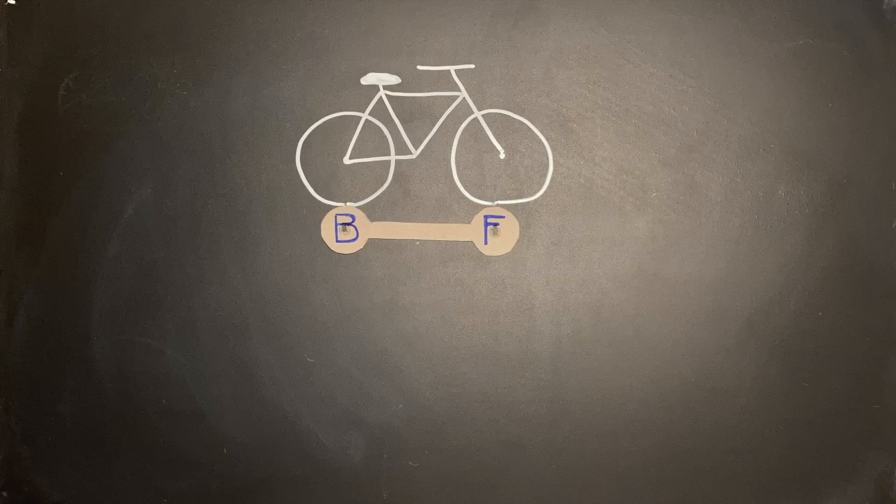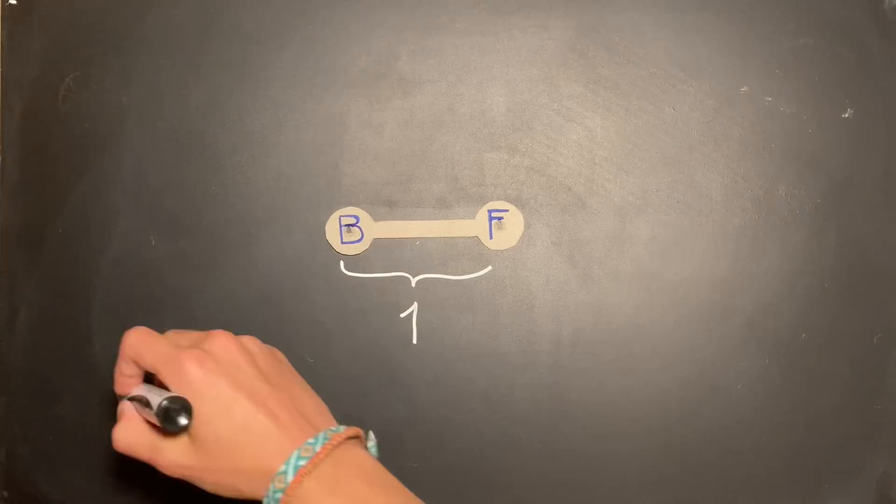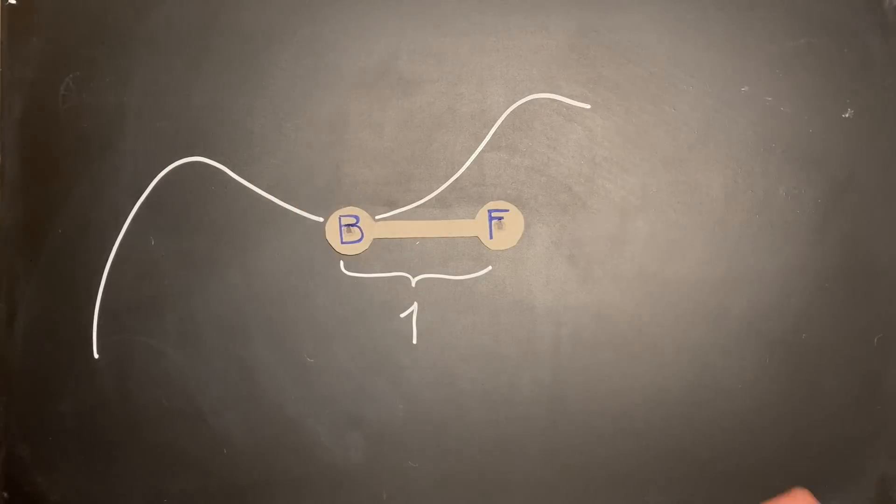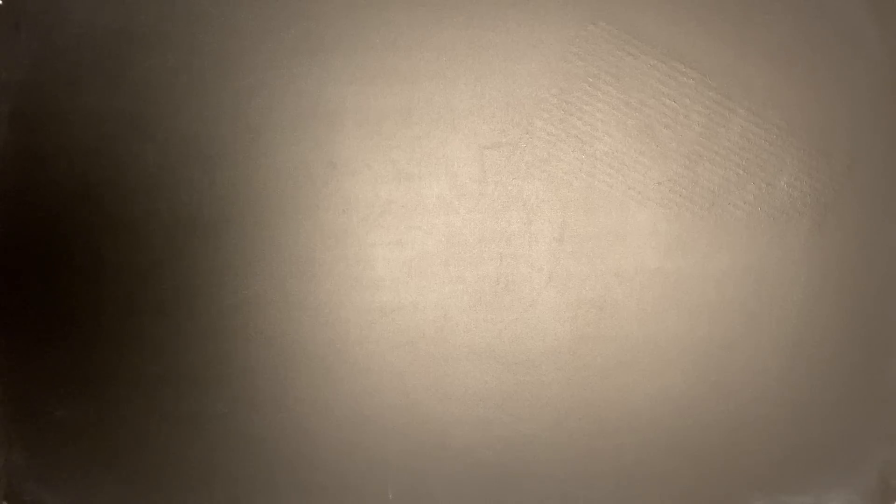From our first observation, segment FB has a fixed length, say one. And from our second observation, segment FB must be tangent to the path of the back wheel at all times.